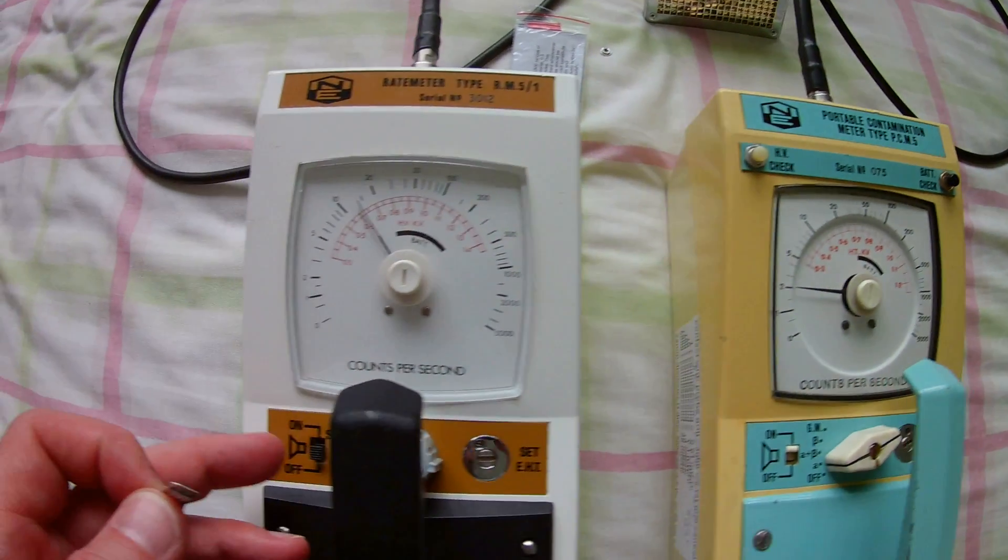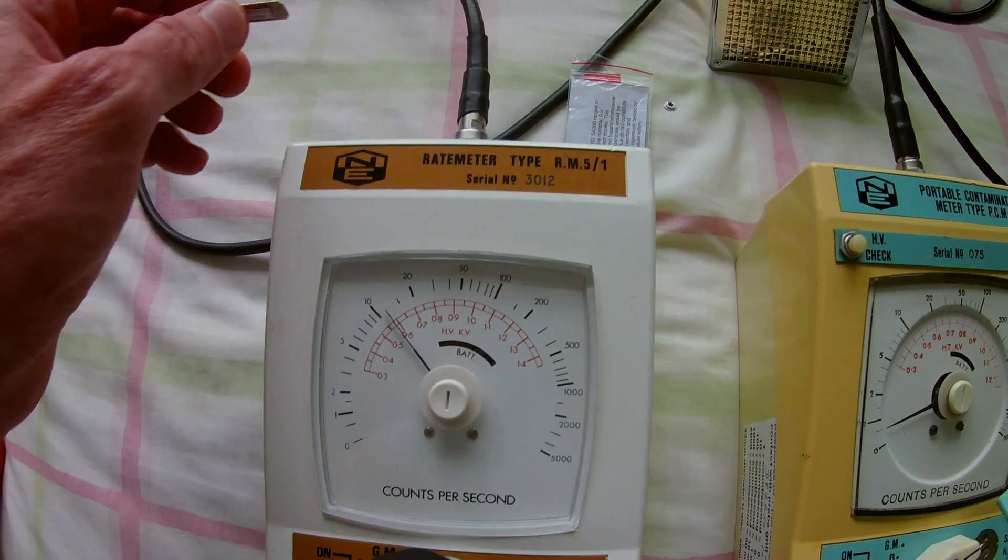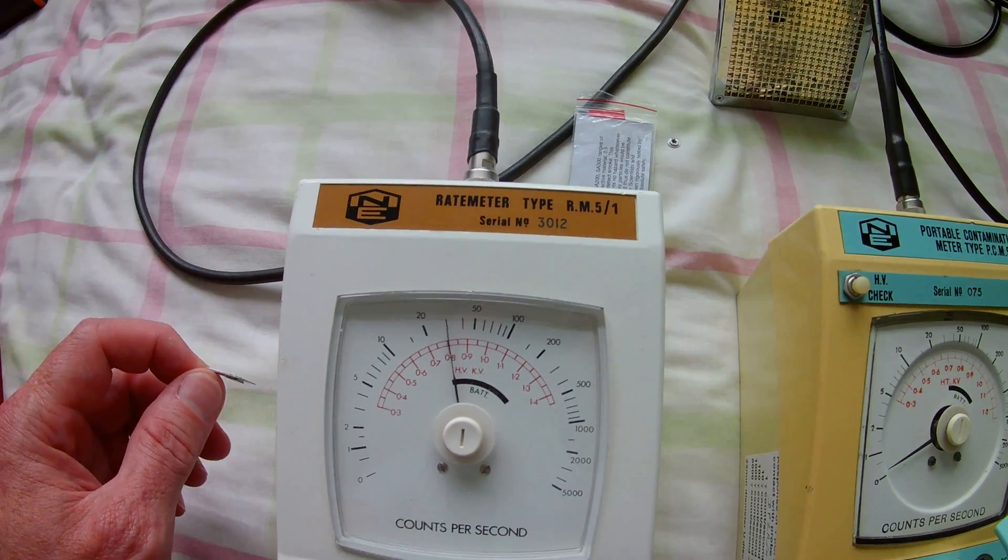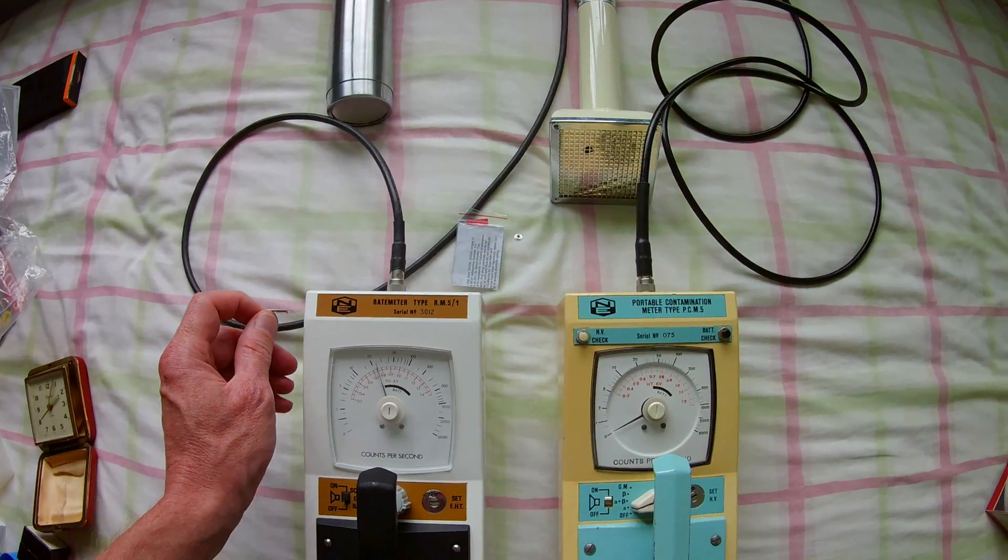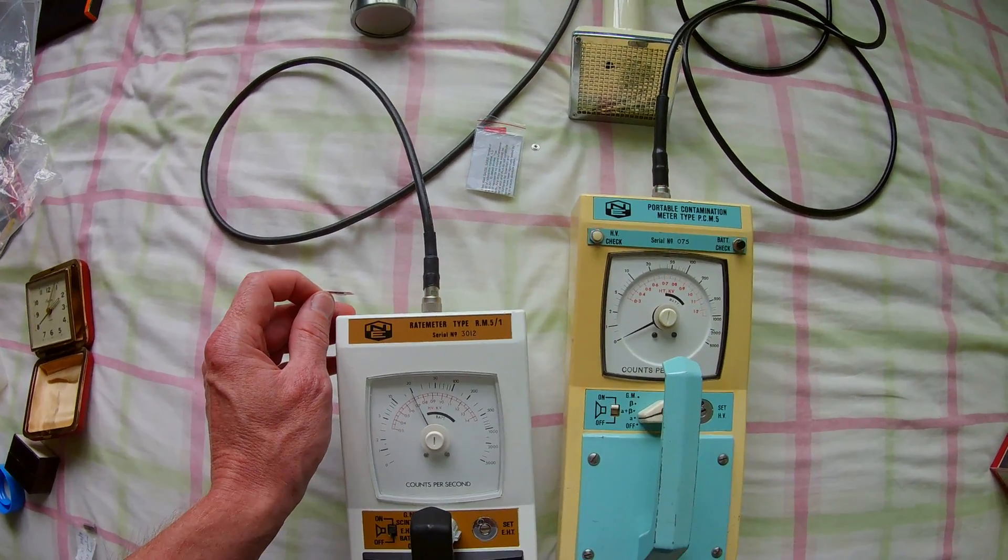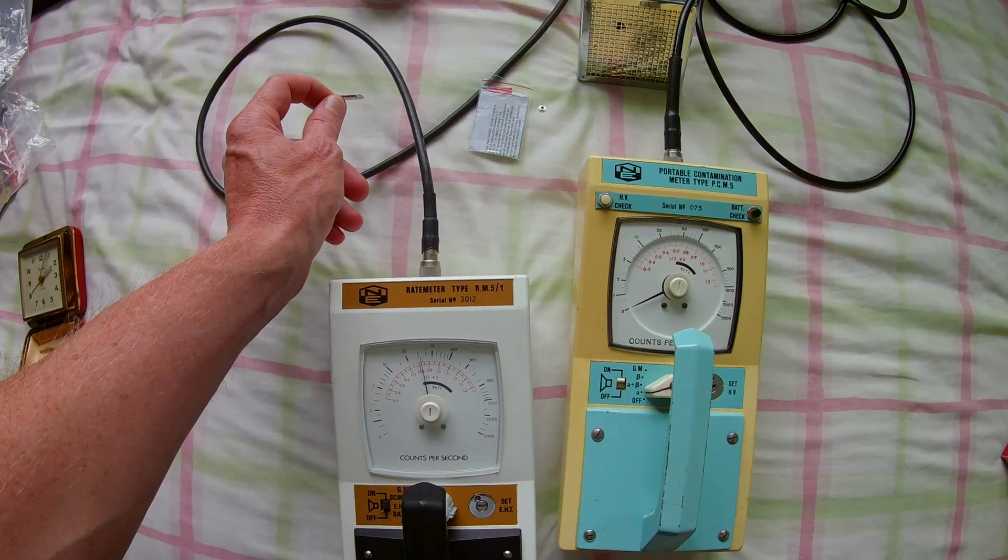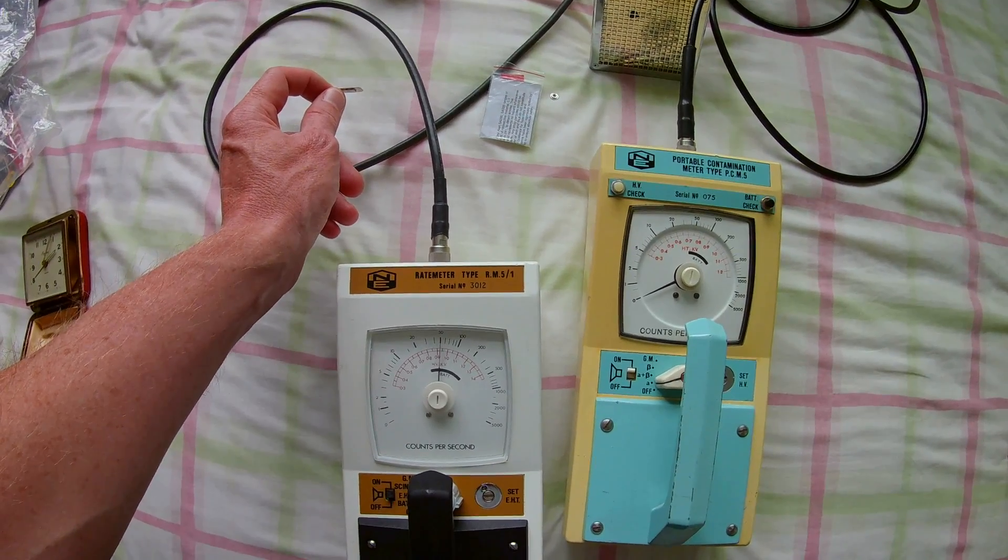If we have a look now at the rate meter for low energy gamma rays, we can detect them at a very much larger distance. So the count rate here, we're at about one foot away and we're getting 20 counts per second. Six inches we're getting about 30 to 40 counts per second.